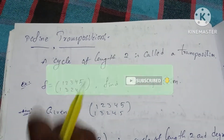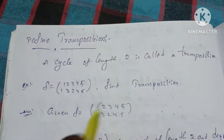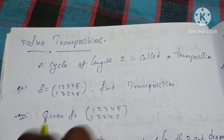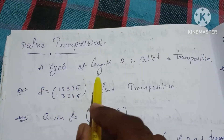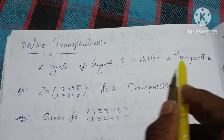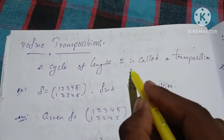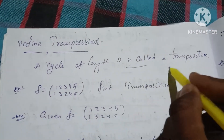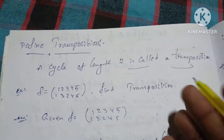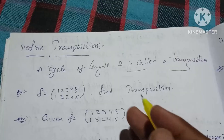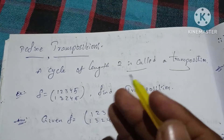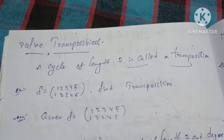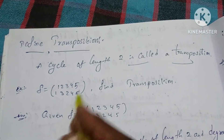Define transposition. What is transposition? A cycle of length 2 is called a transposition. Let's give an example.